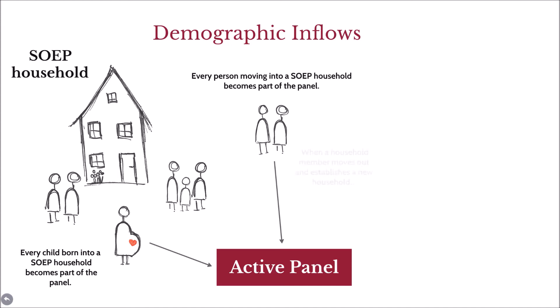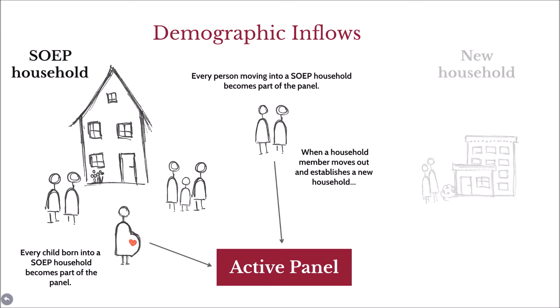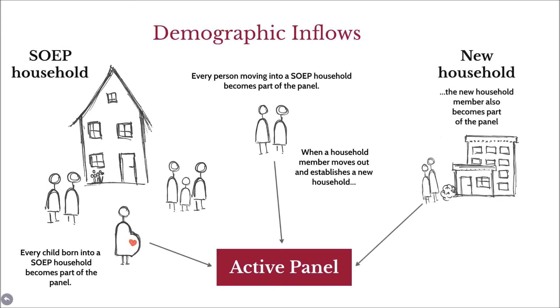When a member of a SUP household moves out and establishes or joins another household, all members of this household are also asked to participate in the panel. The typical example here are grown-up children who leave the parental household. This way we try to follow all our respondents throughout their lives and through all the households they ever lived in.